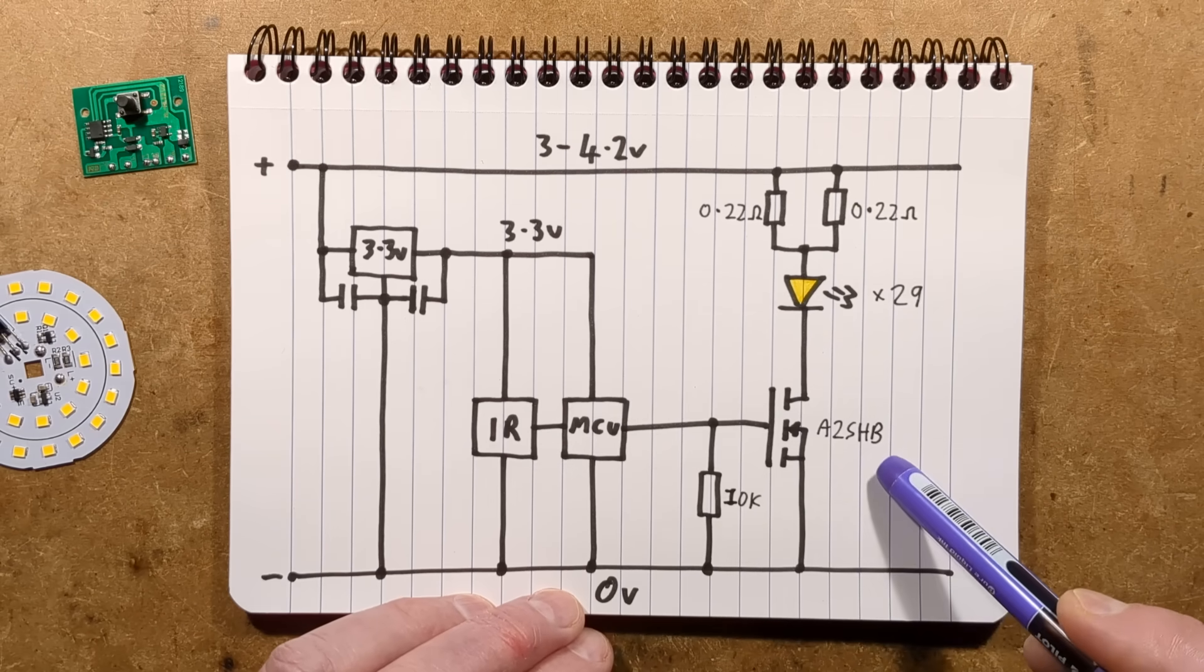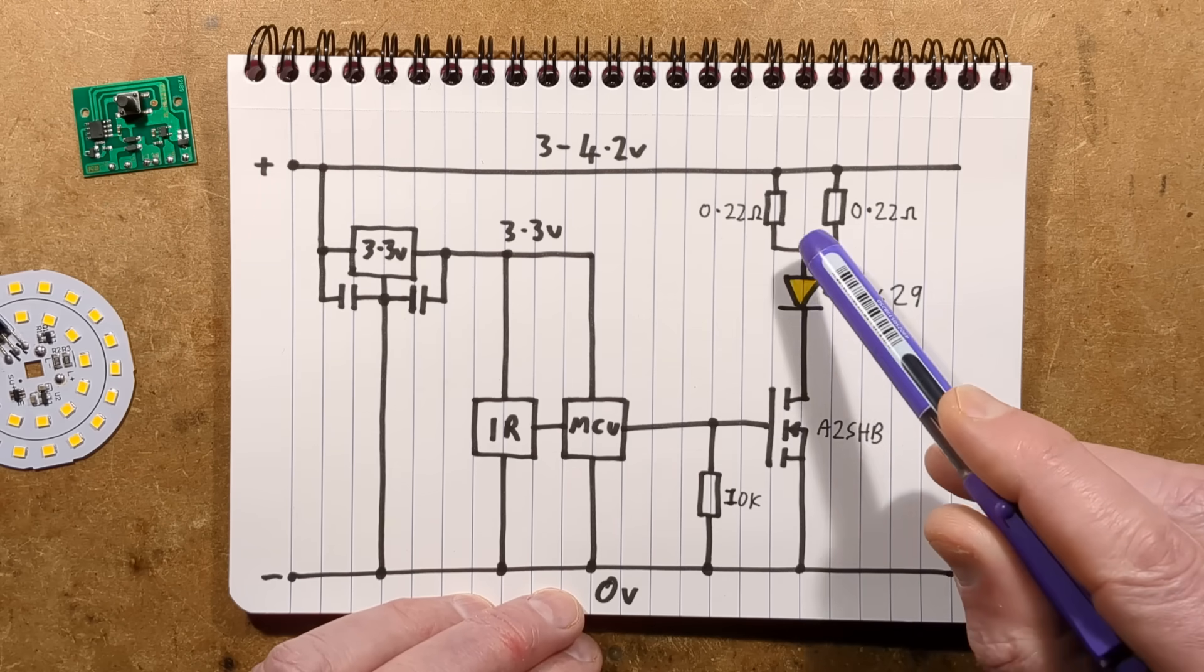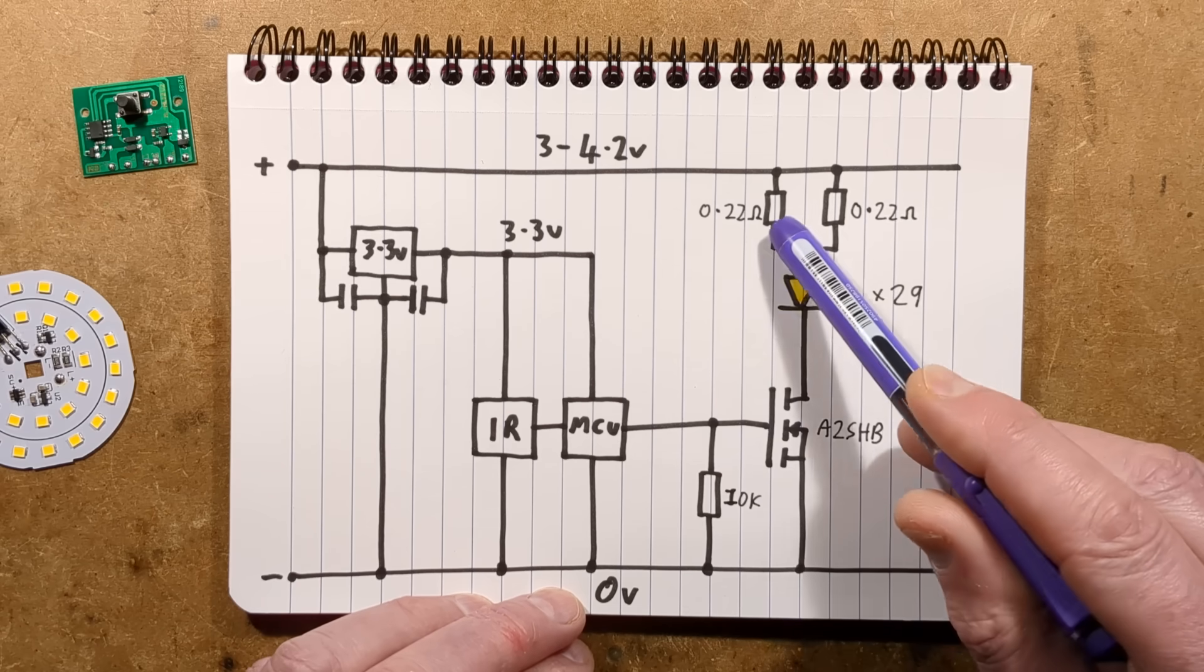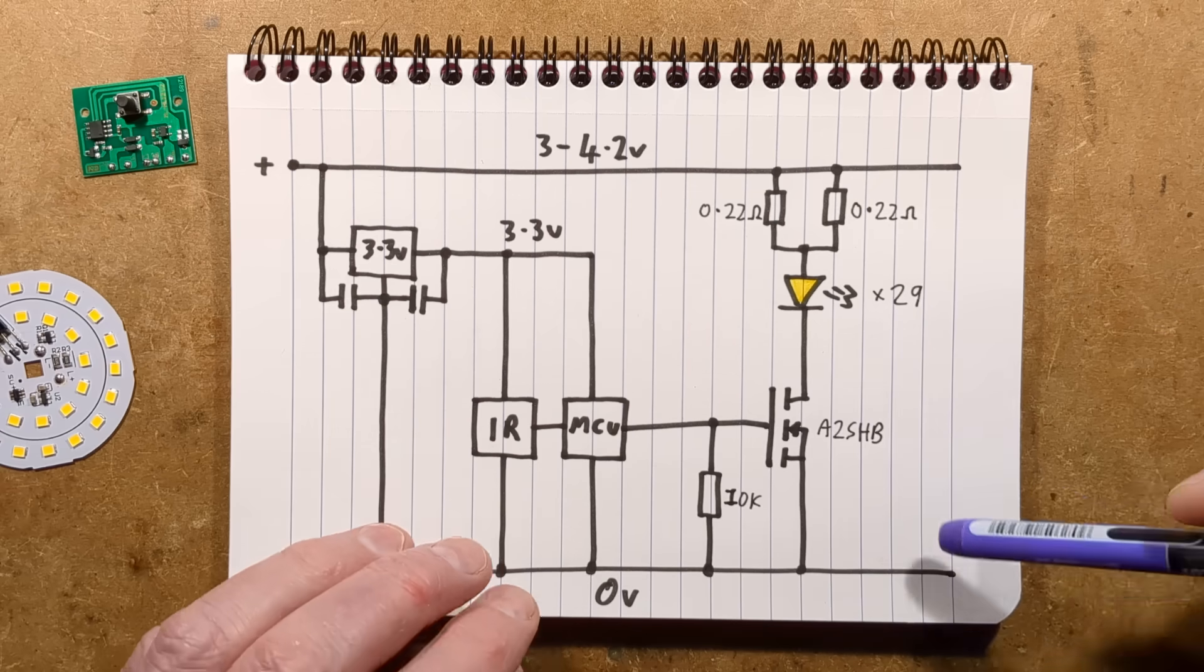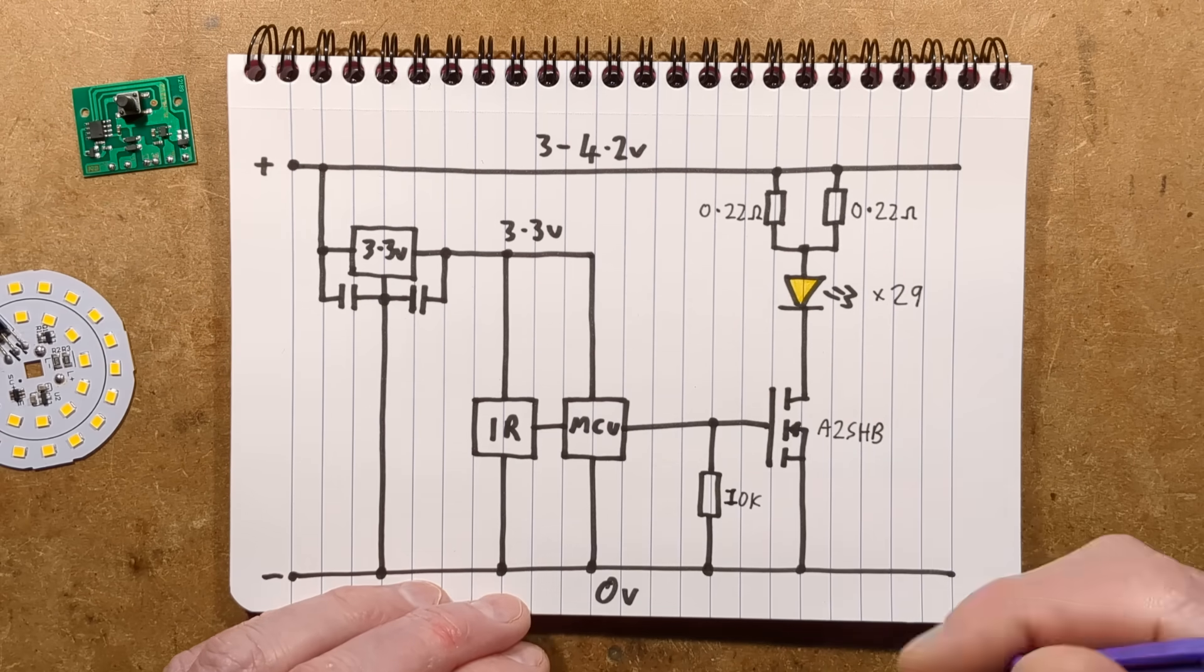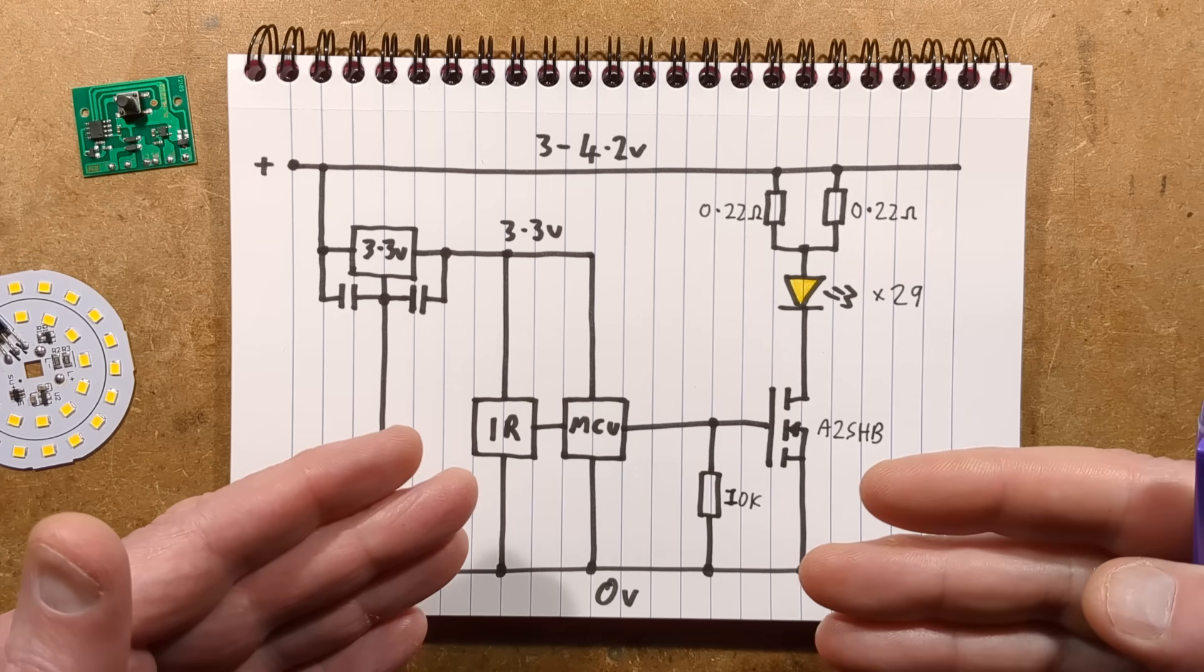and then the output with the 10k pull down resistor, to an A2SHB, very classic MOSFET, 29 LEDs in parallel, and then those two 0.22 ohm resistors, giving a total of about 0.11, but of course you've got that long thin cable that's feeding it as well, which will also act as a current limit, and also the microcontroller is pulse modulating the LEDs,